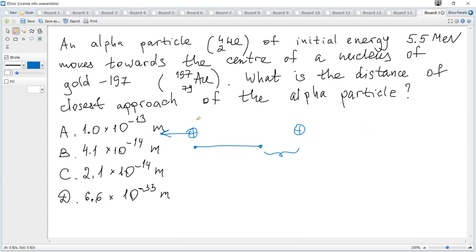The kinetic energy of an alpha particle is completely transferred into electric potential energy. So it looks like this: